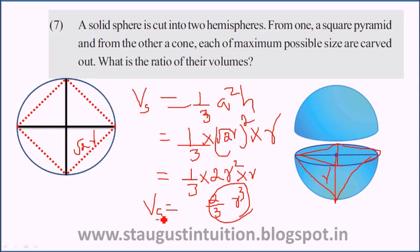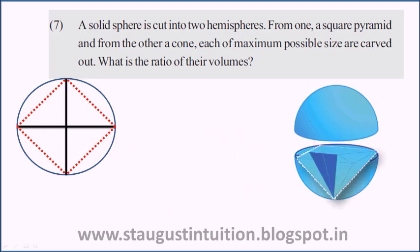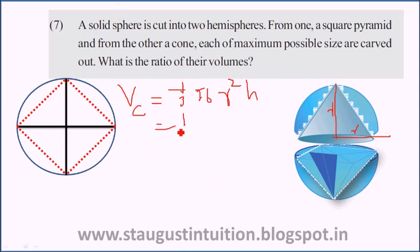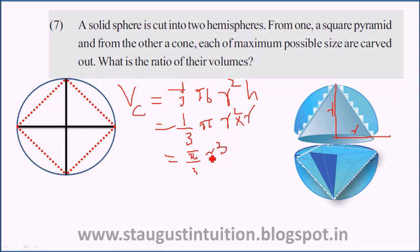For the cone carved from the other hemisphere: the cone has radius r = R and height h = R. Volume of cone = (1/3)πr²h = (1/3)π × R² × R = (π/3)R³. This is the volume of the cone.